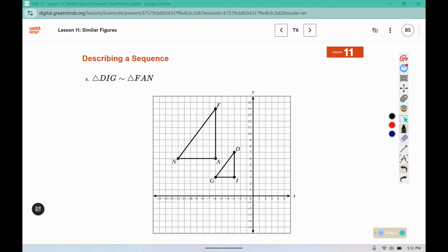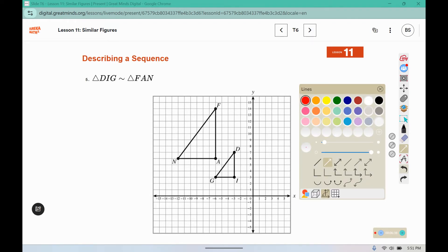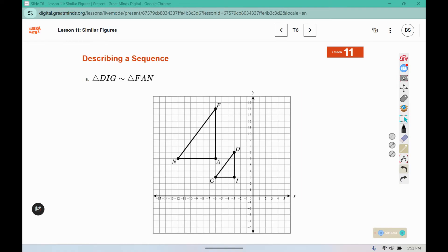Five, DIG is similar to FAN. If we connect those using a line, we might be able to find a center of dilation. Let's see here, F through D, A through I, and N through G. It appears that they dilated from the origin, so we're going to say dilate from the origin.